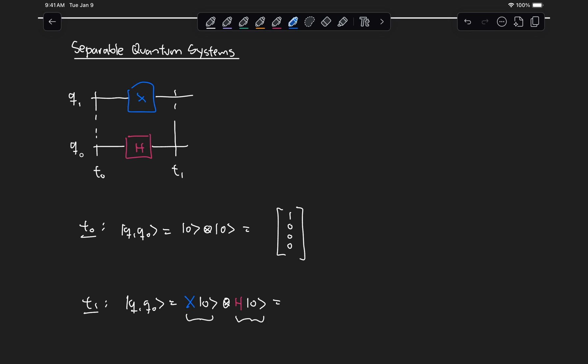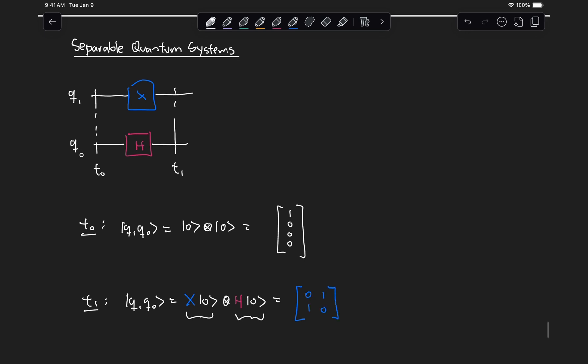So let's go ahead and do that. So we know the X gate is 0, 1, 1, 0, and then state 0 is 1, 0, and then tensored with the Hadamard gate, which is 1 over root 2, 1, 1, 1, minus 1, and then state 0.